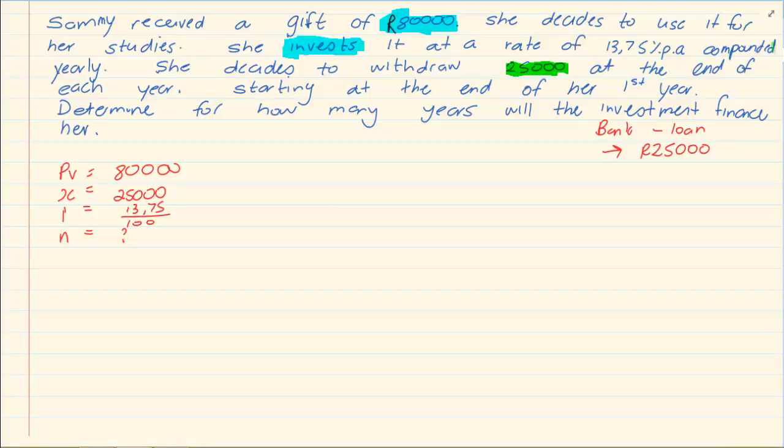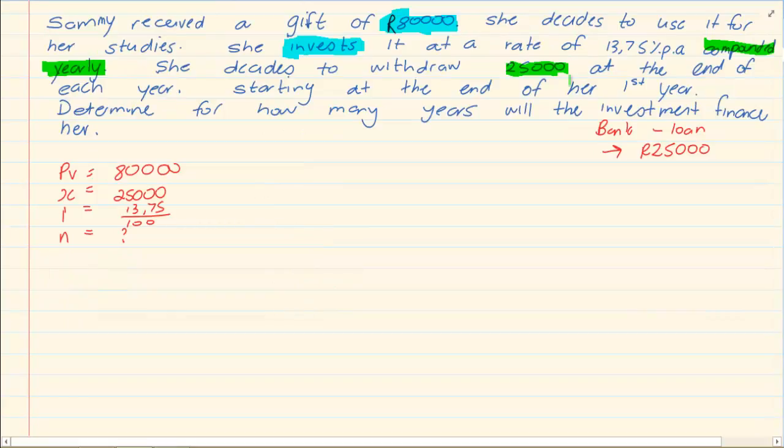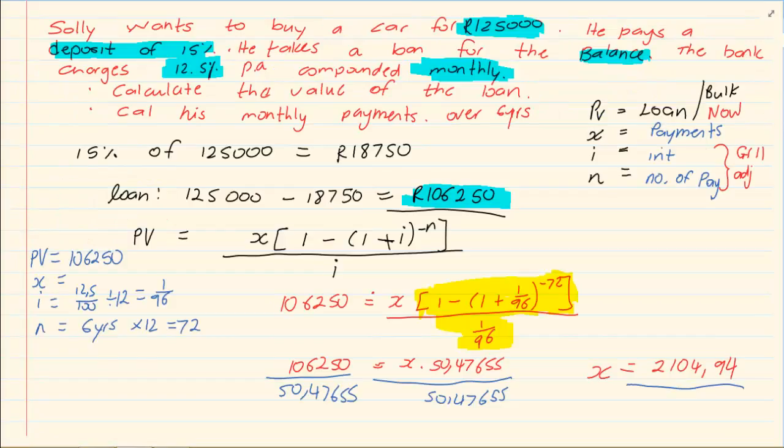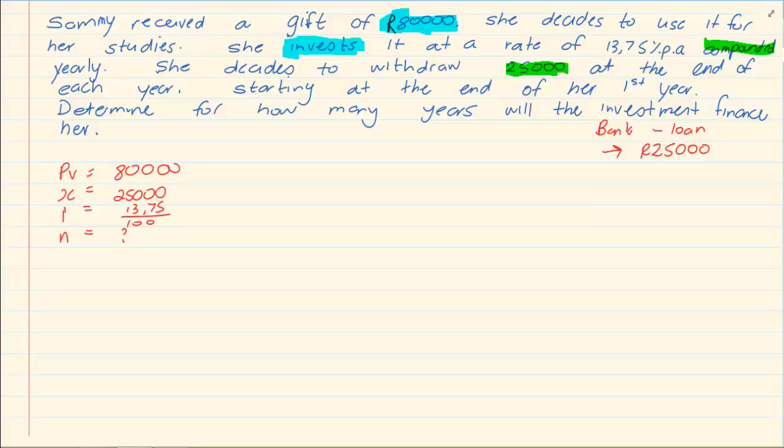Now, look. You would notice that the interest is compounded yearly. But in the beginning, I told you that the interest rate and the interval payments must link. Now, if you look at this, it is compounded yearly. And she is taking payments also yearly. So, can you see, if it is compounded yearly, then you have to have payments yearly. If you look at the previous question, her payments were monthly and her interest was monthly. What is important is that you must be able to notice that we are talking of present value even though it doesn't sound like it.